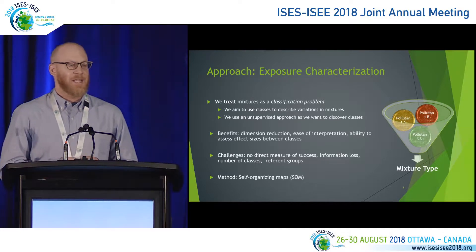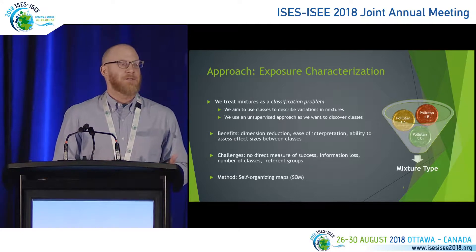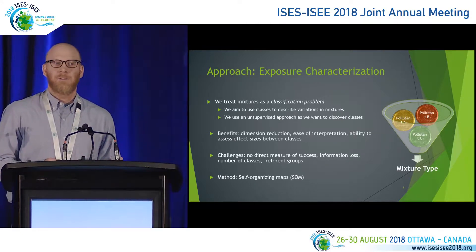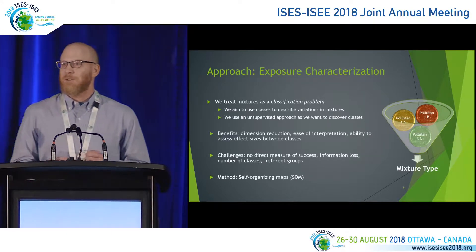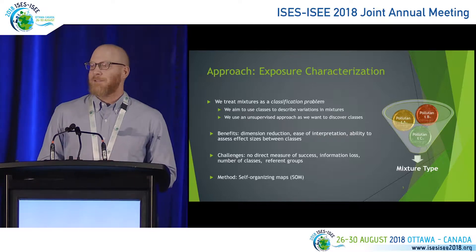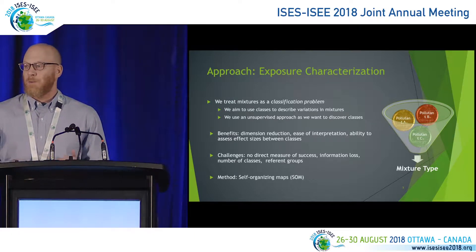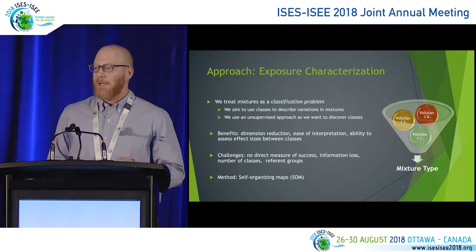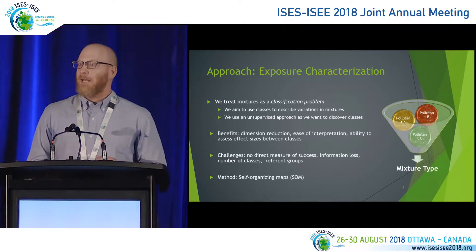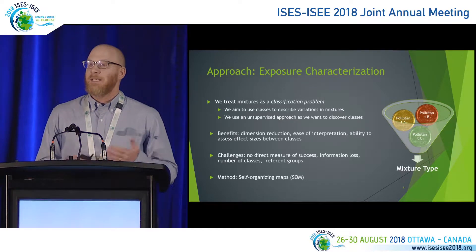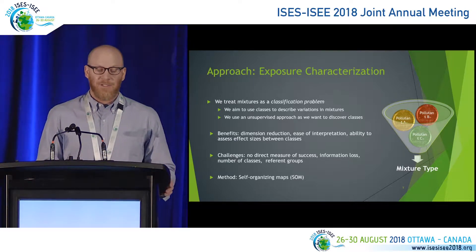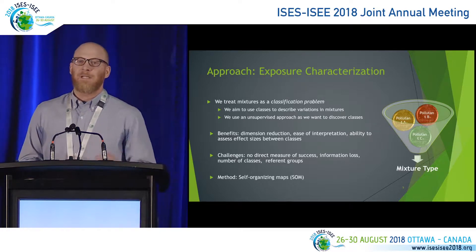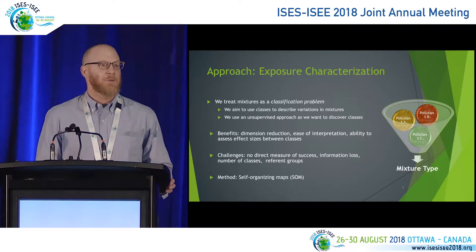We address mixtures as a classification problem. What we would like to do is describe variations in mixtures or combinations using classes or subgroups in the data set. We use an unsupervised approach because in many cases we don't know a lot about our mixtures data set, and we need to discover the types of patterns that occur in these complex data. Multi-collinearity or high correlation among variables is really problematic for mixtures research, while classifications help alleviate this problem by reducing the dimensionality of the data. Classes are pretty straightforward to interpret, and in subsequent analysis you can assess effect sizes between classes to estimate things like joint effects.